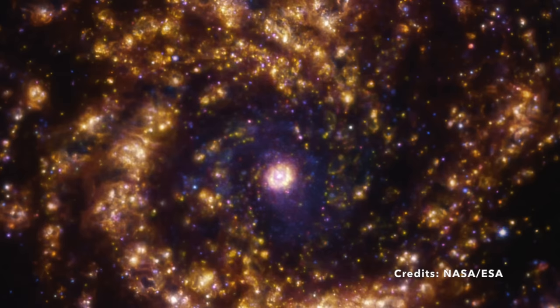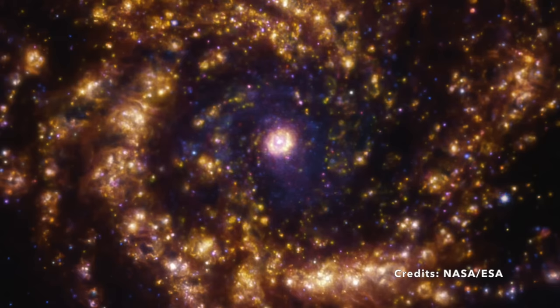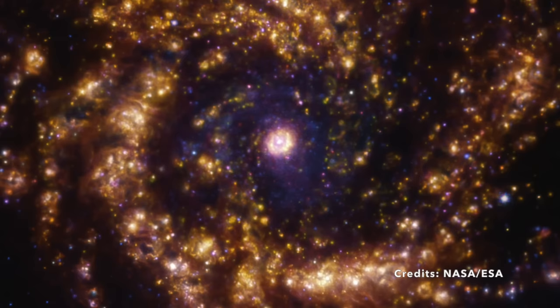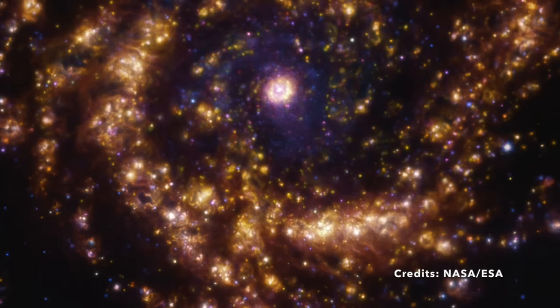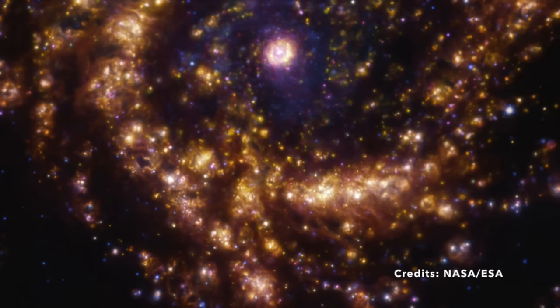The universe is brimming with tales, and today we zoom into one particular story: the tale of a galaxy where stars are born at a remarkable rate. Enter the realm of Messier 61, also catalogued as NGC 4303, a spiral galaxy and one of the colossal members of the Virgo Cluster.